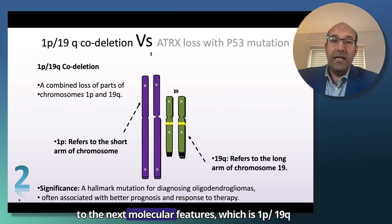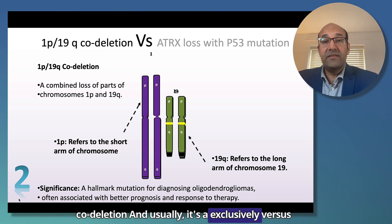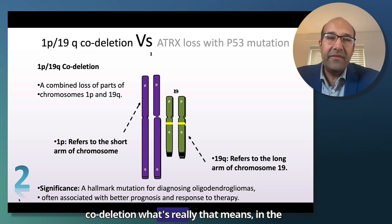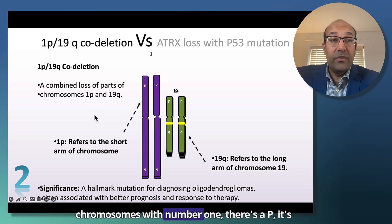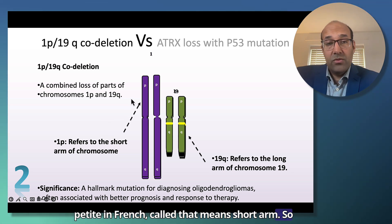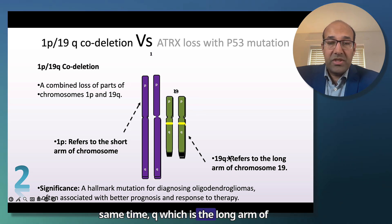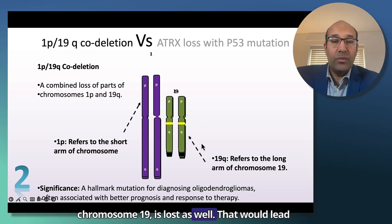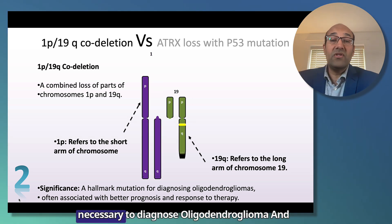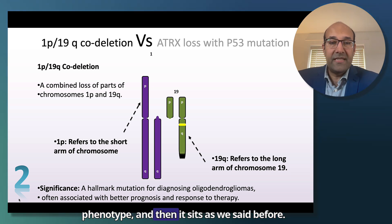Moving to the next molecular feature: 1p19q codeletion. It is usually exclusive versus ATRX loss and p53 mutations. What does 1p19q codeletion really mean? In chromosome 1, there is a 'p' arm — 'petite' in French — meaning the short arm. So the short arm of chromosome 1 is lost. At the same time, the 'q' arm of chromosome 19 is lost as well. This mutation is necessary to diagnose an oligodendroglioma, and it is more prioritized than histological or phenotypic analysis.